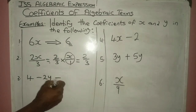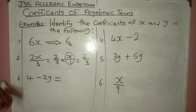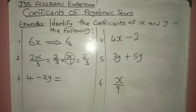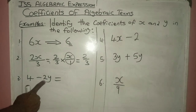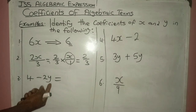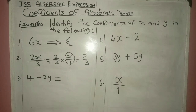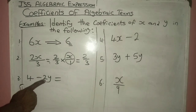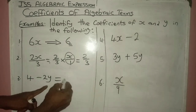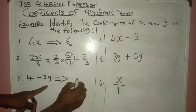The next one we have is 4 minus 2y. When you look at the two terms, 4 is of less importance to this question because 4 does not have the letter y. We are talking about the number being multiplied to y to make it minus 2y. What we have here is minus 2y — not just 2y, but minus 2y. So the coefficient of y is the number attached to it by multiplication, and that number is minus 2. The coefficient of y here is minus 2.